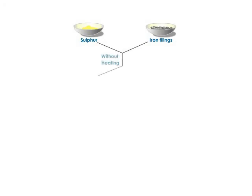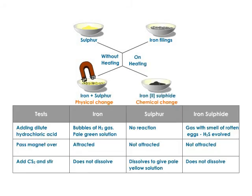Formation of a chemical compound is a chemical change, and the compound's properties are entirely different from its constituent elements. For example, when you mix iron and sulfur without heating, a magnet still attracts the iron filings, showing they remain as separate entities with no chemical reaction. However, on heating, they undergo a chemical reaction and form ferrous sulfide, on which the magnet has no effect.